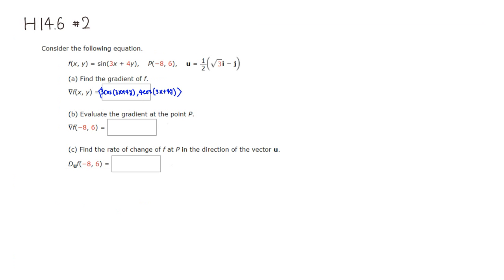So let's do part b. We want to evaluate this gradient at the point p. So if you plug in negative 8 for x, it's going to be negative 24. And 6 for y, so 4 times 6 is positive 24. So 3x plus 4y is going to be 0. Cosine of 0 is 1. So you have 3 times 1, which is 3, and 4 times 1, which is 4. So it's (3, 4).